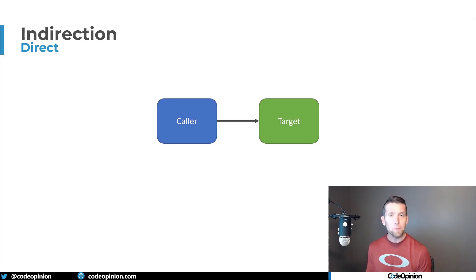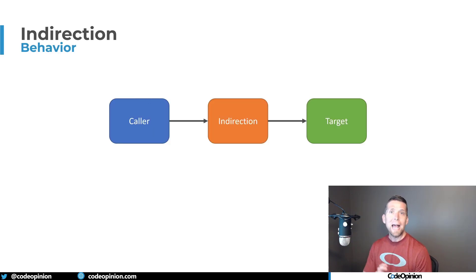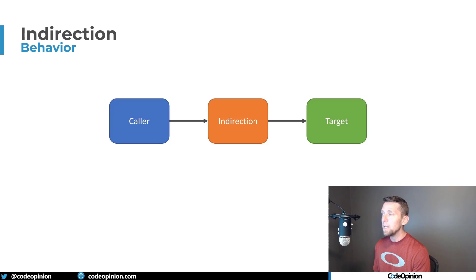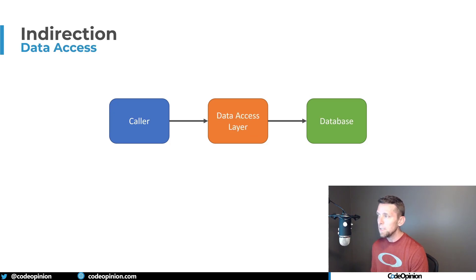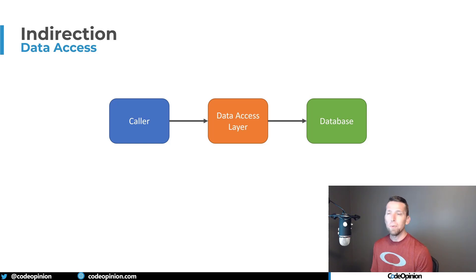First let's talk about some examples of indirection and then I'll show it in code. What we're referring to is we have a caller calling some particular target, and we're going to add something in the middle between those two units or layers. The most common example is adding a data access layer — instead of writing database code directly from your caller, you have a data access layer that handles the complexity of making that call.